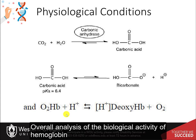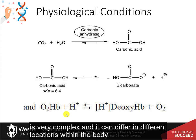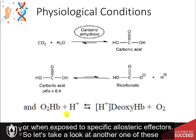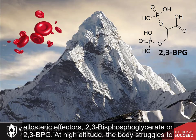Overall analysis of hemoglobin's biological activity shows that the regulation of a single protein can be very complex, differing at different locations within the body or when exposed to specific allosteric effectors. Let's take a look at another one of these allosteric effectors: 2,3-bisphosphoglycerate, or 2,3-BPG.